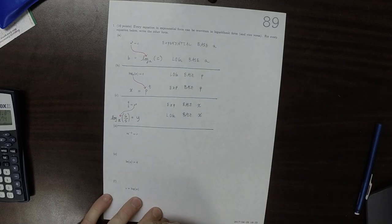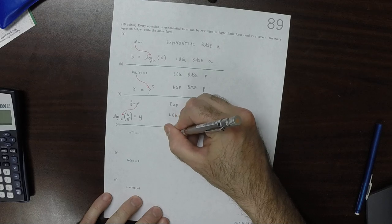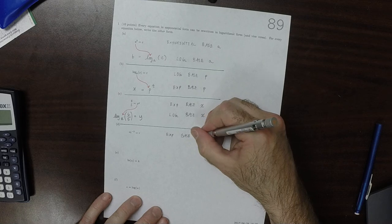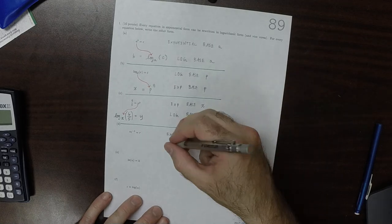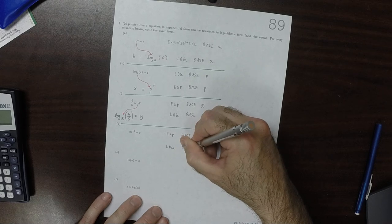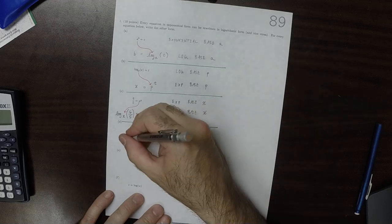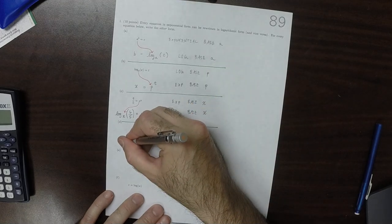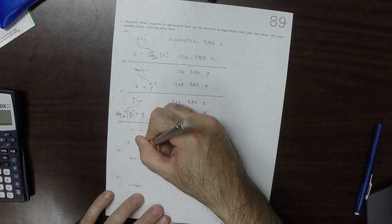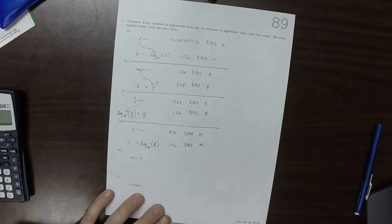Okay. So now this is in exponential base M. And we want it to be in logarithm base M. So the negative 3 will stay on its side. The R will stay on its side. But now the right-hand side will be in logarithm base M. Like so.